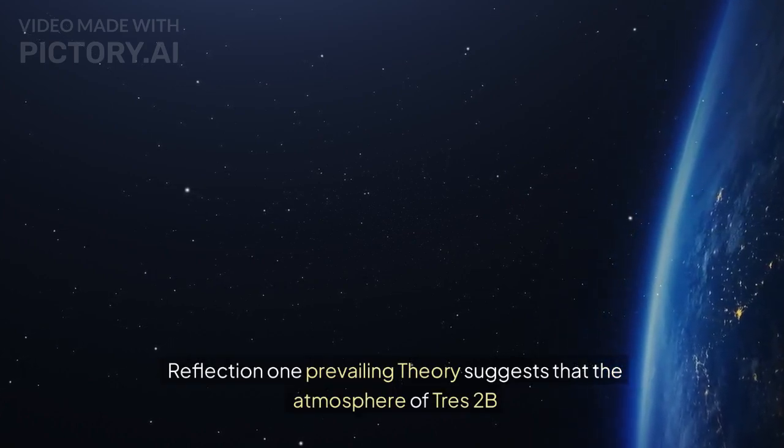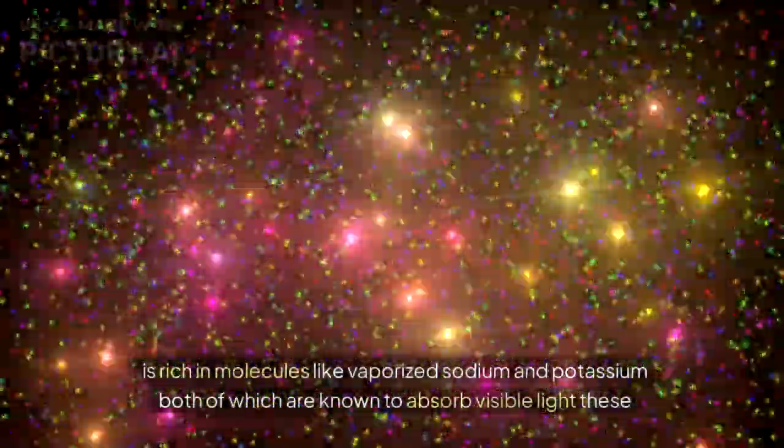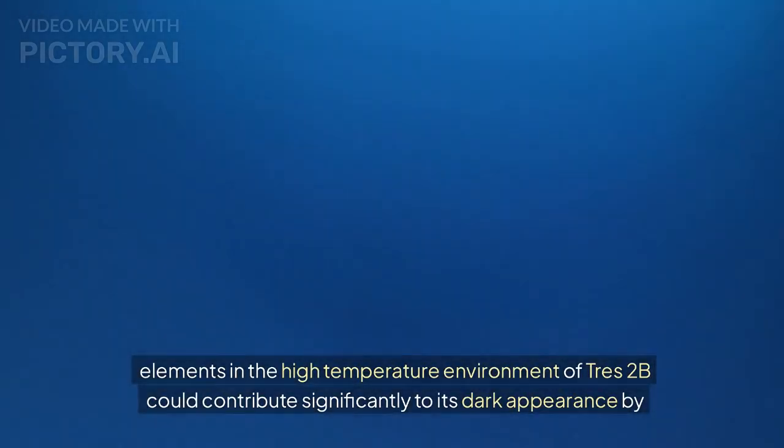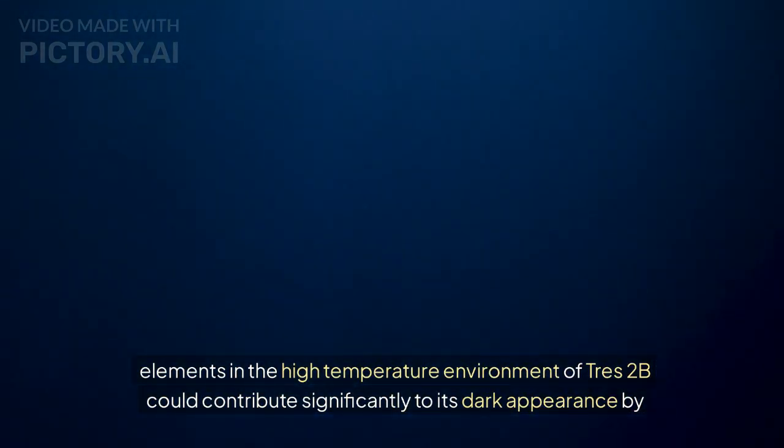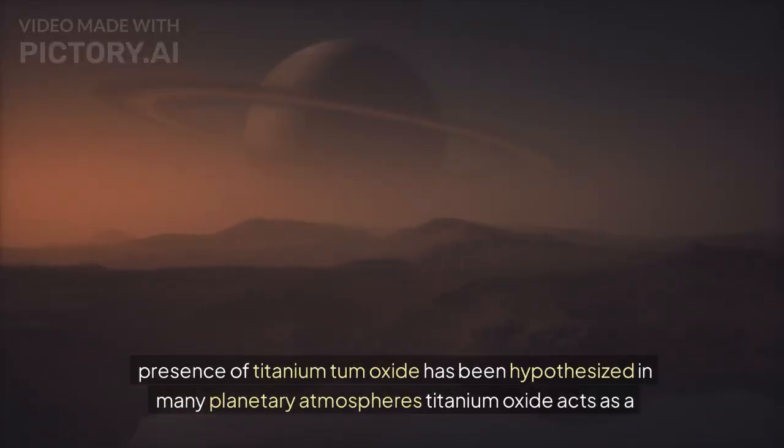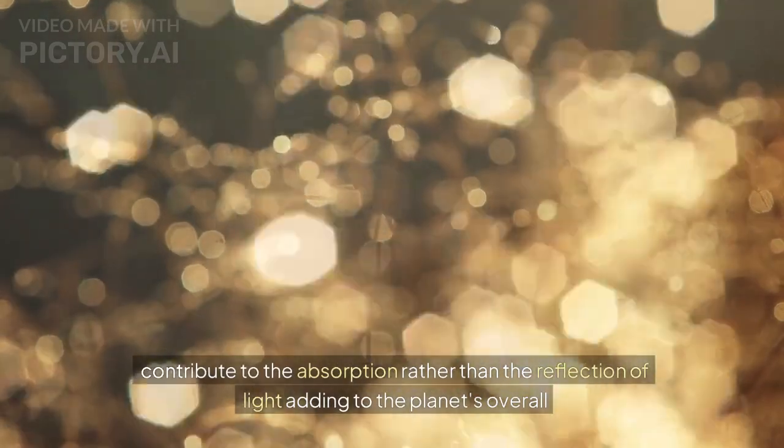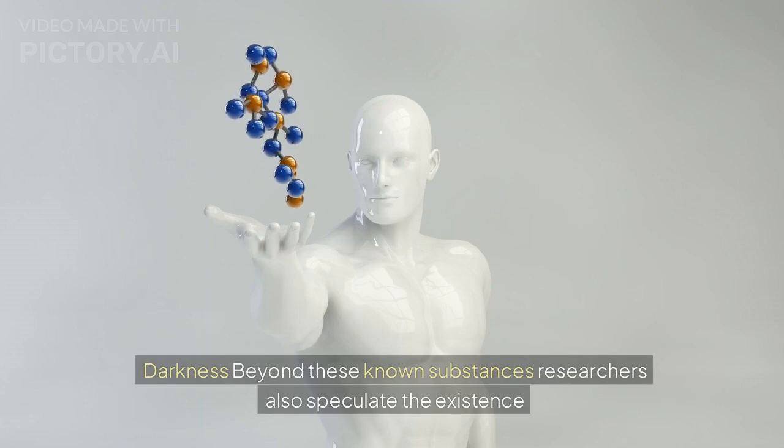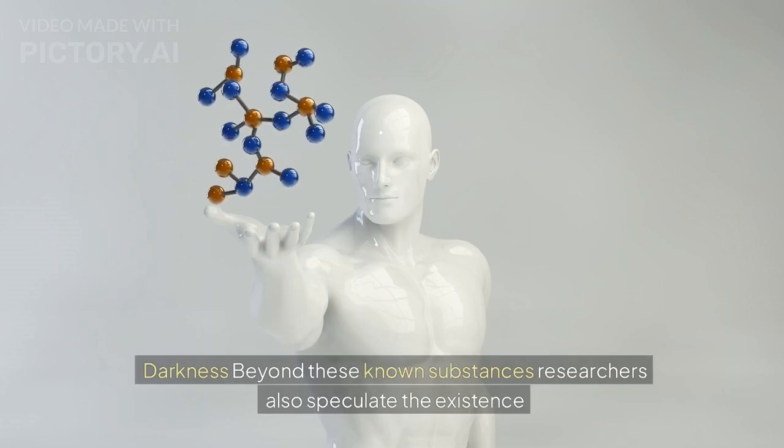One prevailing theory suggests that the atmosphere of TrES-2b is rich in molecules like vaporized sodium and potassium, both of which are known to absorb visible light. These elements in the high-temperature environment could contribute significantly to its dark appearance. Additionally, the presence of titanium oxide has been hypothesized. In the extreme conditions on TrES-2b, it may contribute to the absorption rather than the reflection of light, adding to the planet's overall darkness.